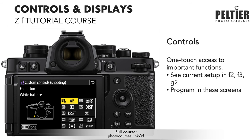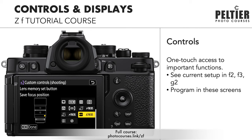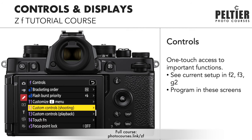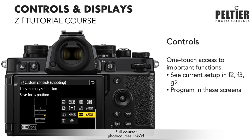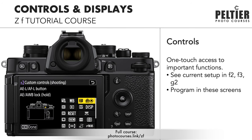The Nikon ZF has seven customizable controls, and that number can be expanded further with lenses that have function buttons. All of these can be programmed to different functions, and those available functions depend on which control you're using. You can see the current camera setup and program it in the custom settings menu — custom settings F2 for shooting mode, F3 for playback mode, and F2 for movie mode.